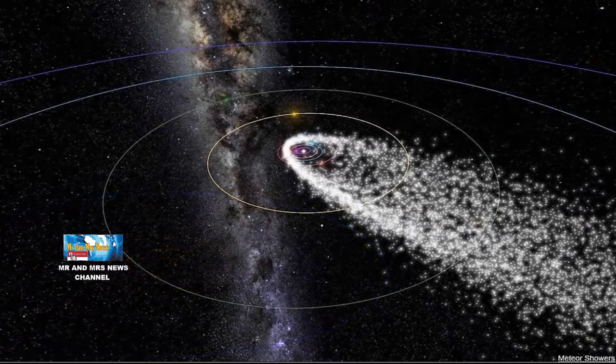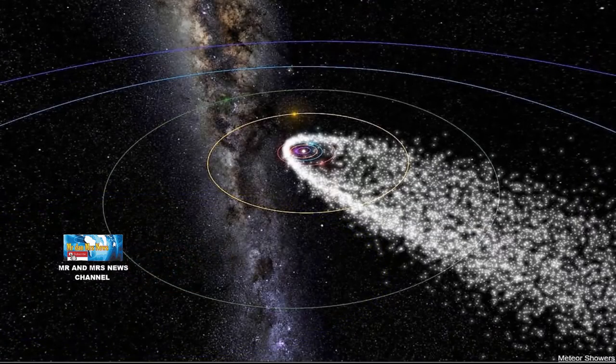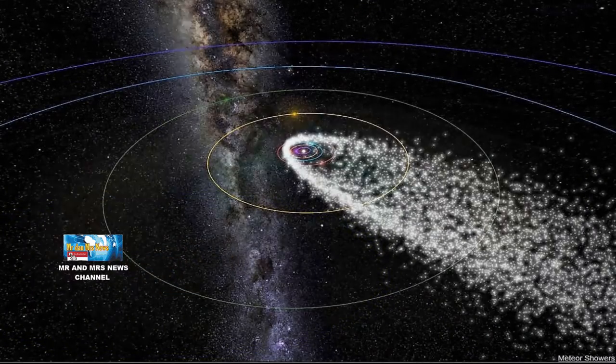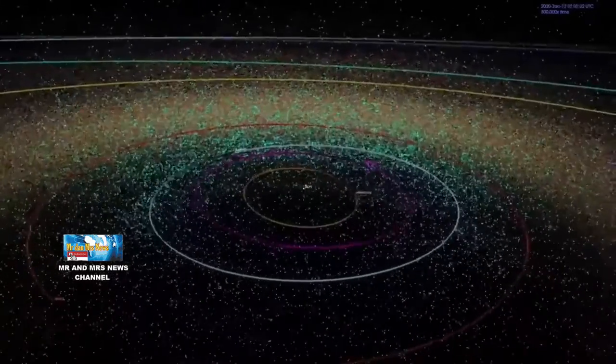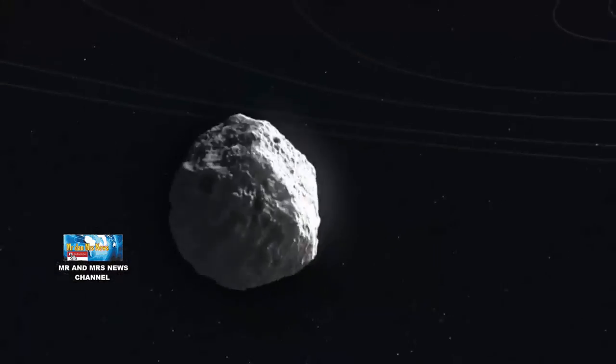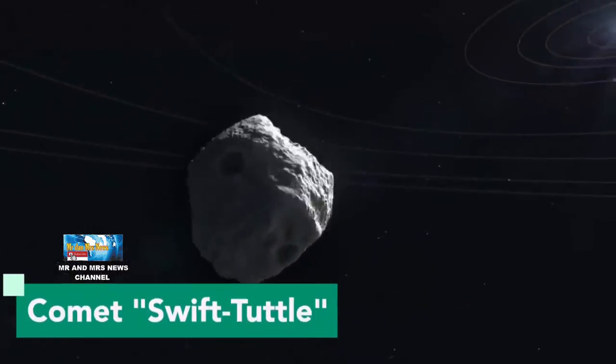Untuk yang paling dekat adalah hujan meteor Perseid. Menurut Lembaga Penerbangan Antariksa Nasional atau LAPAN, hujan meteor Perseid aktif sejak 17 Juli hingga 14 Agustus 2021.